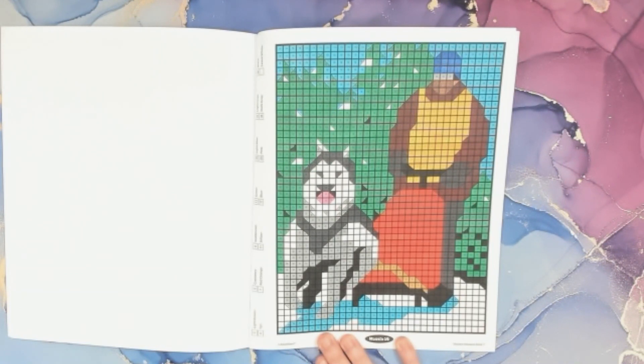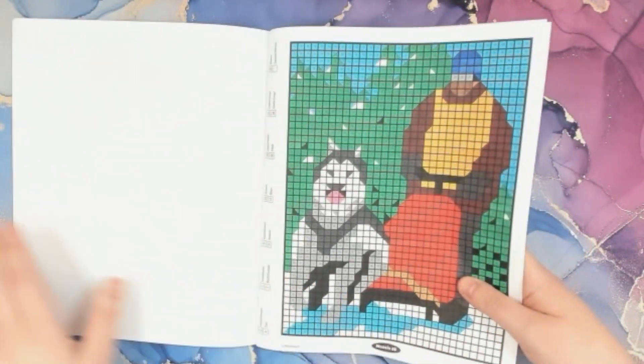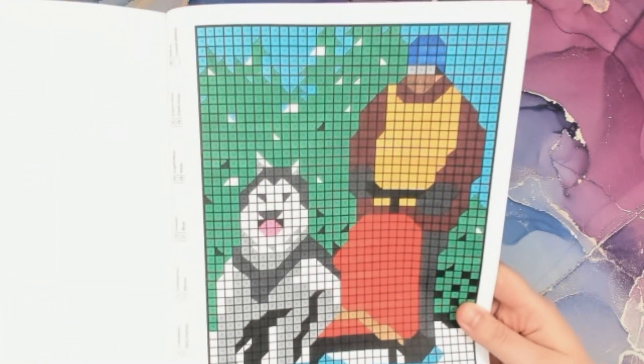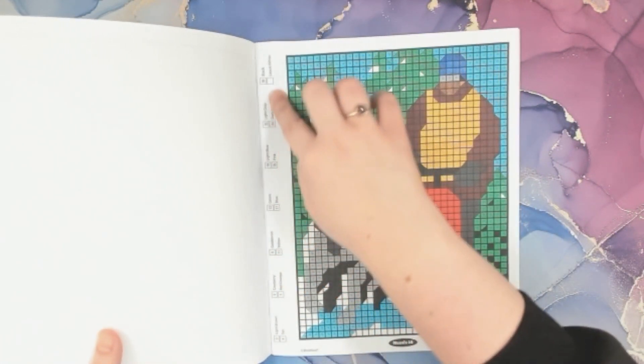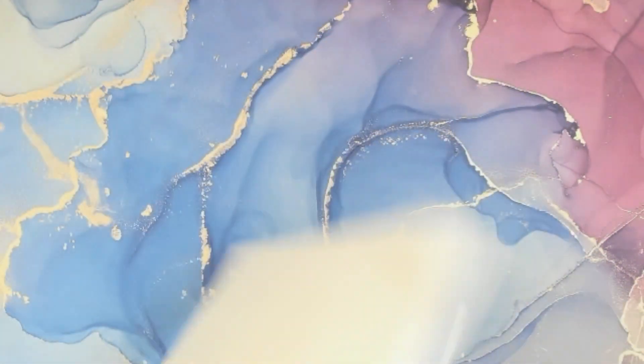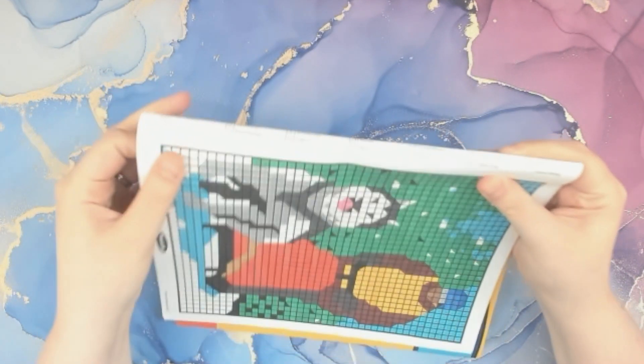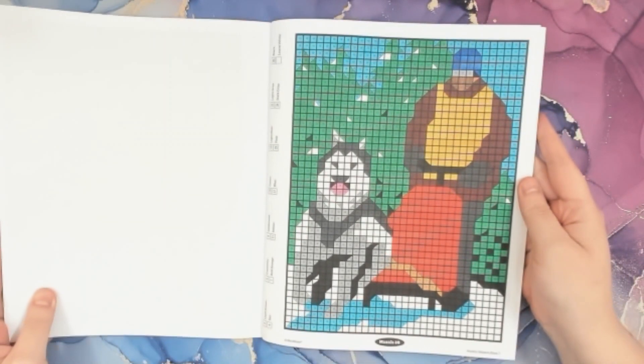This was a fun picture. It actually went fairly quickly for me, and I used Ohuhu because you guys know I love them as well. I'll link those down below. There's the picture. In this book, the colors are on the side, so yeah, all the colors used because it's a color by number.